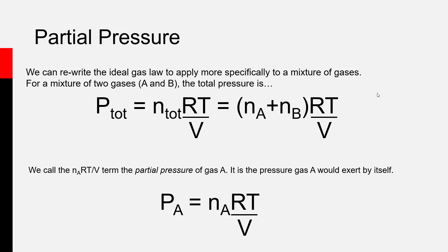At this point, we want to introduce an important idea that follows naturally from the overall ideal gas law. Remember, when we introduced the ideal gas law, it describes the behavior both of gas phase samples composed of a single chemical and also of gas phase mixtures like air. The only thing you need to use the ideal gas law to accurately describe a gas phase mixture is to know the total number of moles of all the gases put together that constitute that mixture.